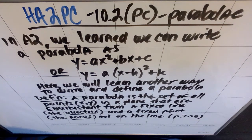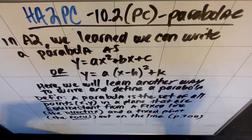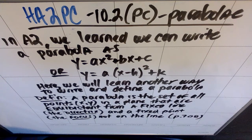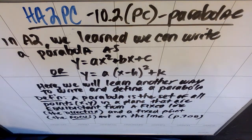This is honors algebra 2 pre-calculus. We're doing section 10.2 in pre-calc, which is paraboli. In algebra 2, we learned we can write a parabola in two common forms: y equals ax squared plus bx plus c, which we use with the quadratic formula, or y equals a times the quantity x minus h squared plus k. This second form is more useful for graphing by hand, because the vertex is at h comma k.